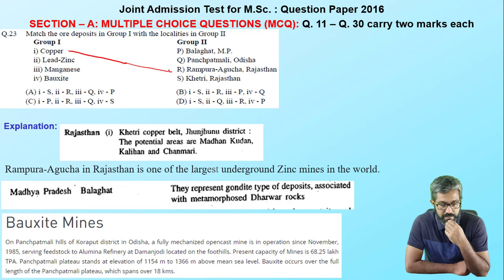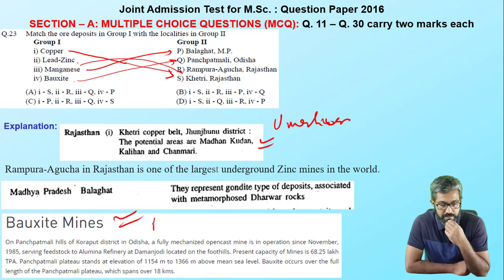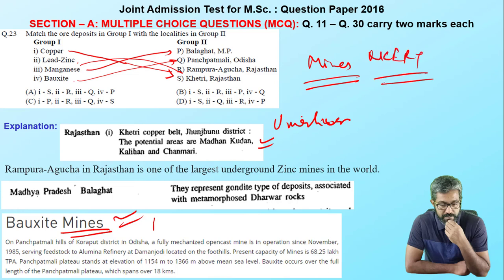Copper is found in Rajasthan, Khetri. Rampura Agucha is famous for zinc. Manganese is found in Madhya Pradesh, Balaghat area. Bauxite is found in Panchpatmali, Odisha. This information is taken from Umeshwar Prasad's book. If you use your mobile internet constructively, just type 'mines in India' and you will get all details from Wikipedia. Also read the NCERT book for more knowledge.